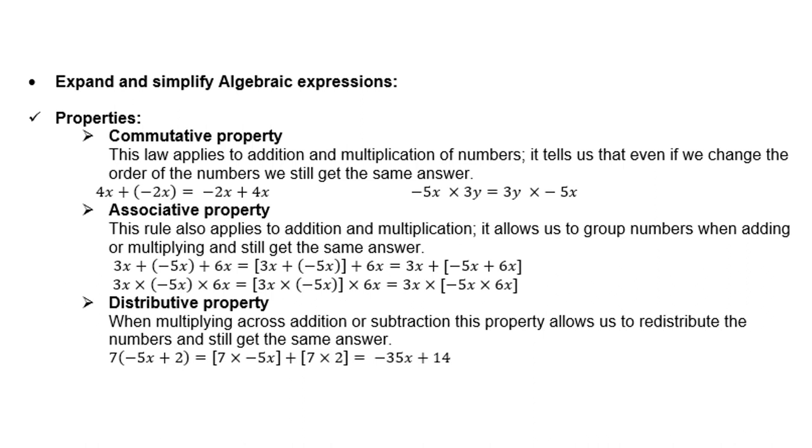Commutative property: the law applies to addition and multiplication of numbers only. It tells us that even if you change the order of the numbers, we still get the same answer. Please remember, if you switch the numbers, it remains the same. It's only applicable for addition and multiplication, not for subtraction and not for division.